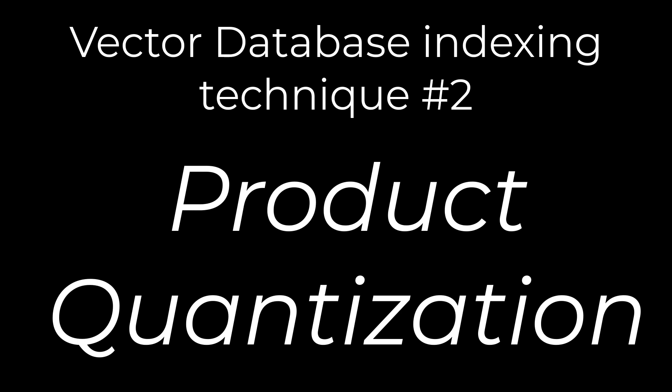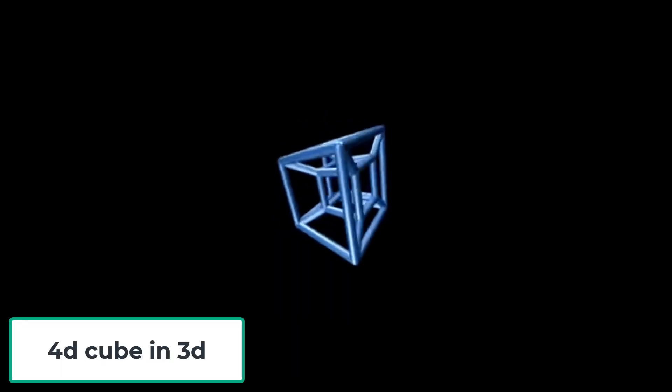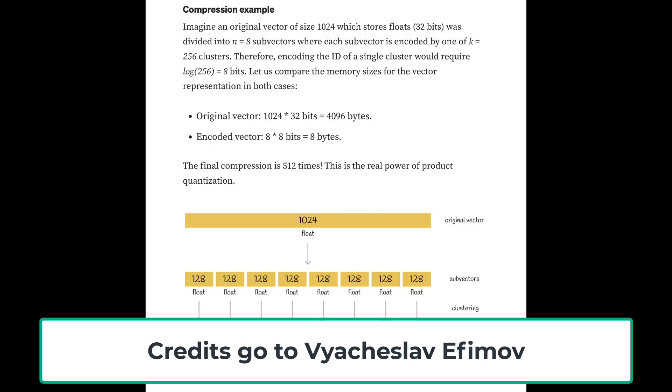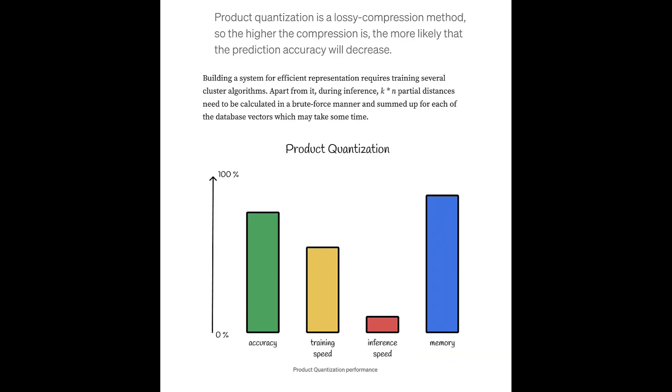That approach is to approximate the vector space by reducing or compressing the number of dimensions of the vectors. This technique is called Product Quantization.